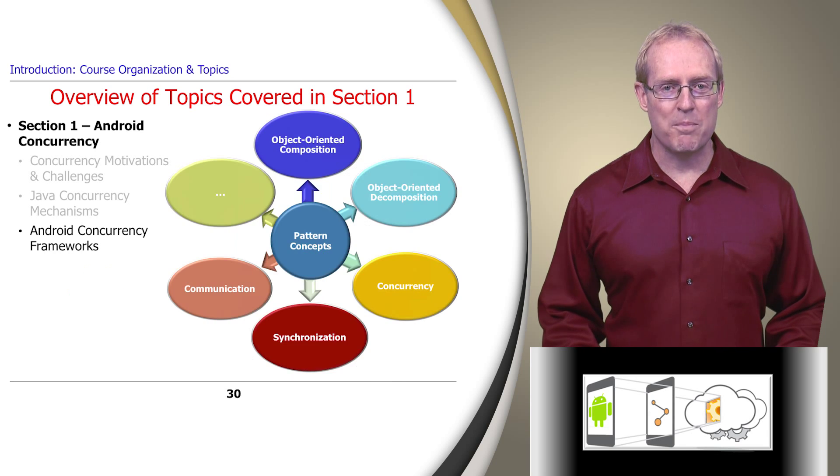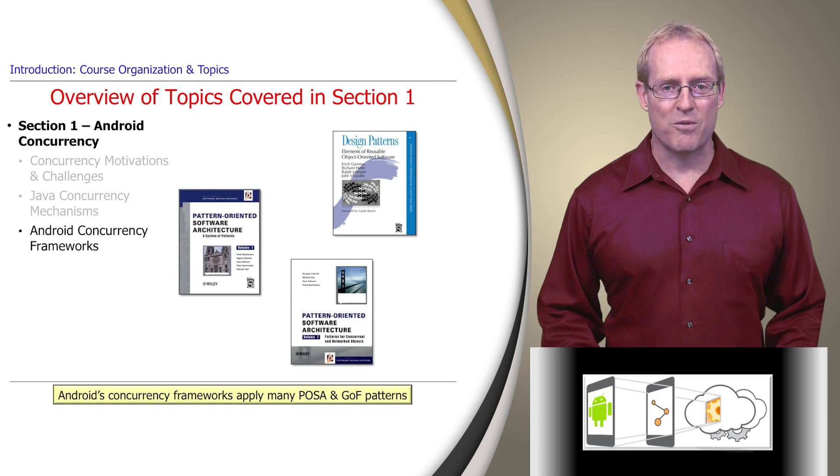Throughout this section, we'll illustrate by example how concurrent Android applications and frameworks are developed by applying many common patterns documented in popular books and websites. These patterns focus on general object-oriented software decomposition and composition techniques, as well as concurrency, synchronization, and communication mechanisms and protocols. Many patterns appear in the Pattern-Oriented Software Architecture, or POSA book, and Design Patterns: Elements of Reusable Object-Oriented Software, or Gang of Four book.